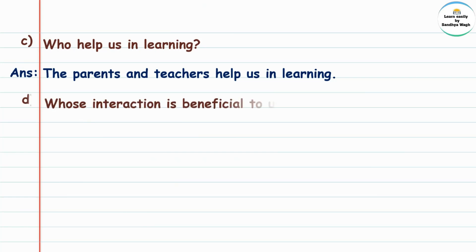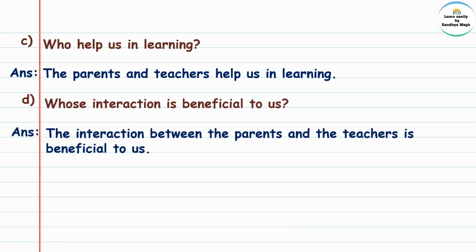(c) Who helps us in learning? Answer: The parents and the teachers help us in learning. (d) Whose interaction is beneficial to us? Interaction means paraspar saumat, and beneficial means faiyadacha. Answer: The interaction between the parents and the teachers is beneficial to us.